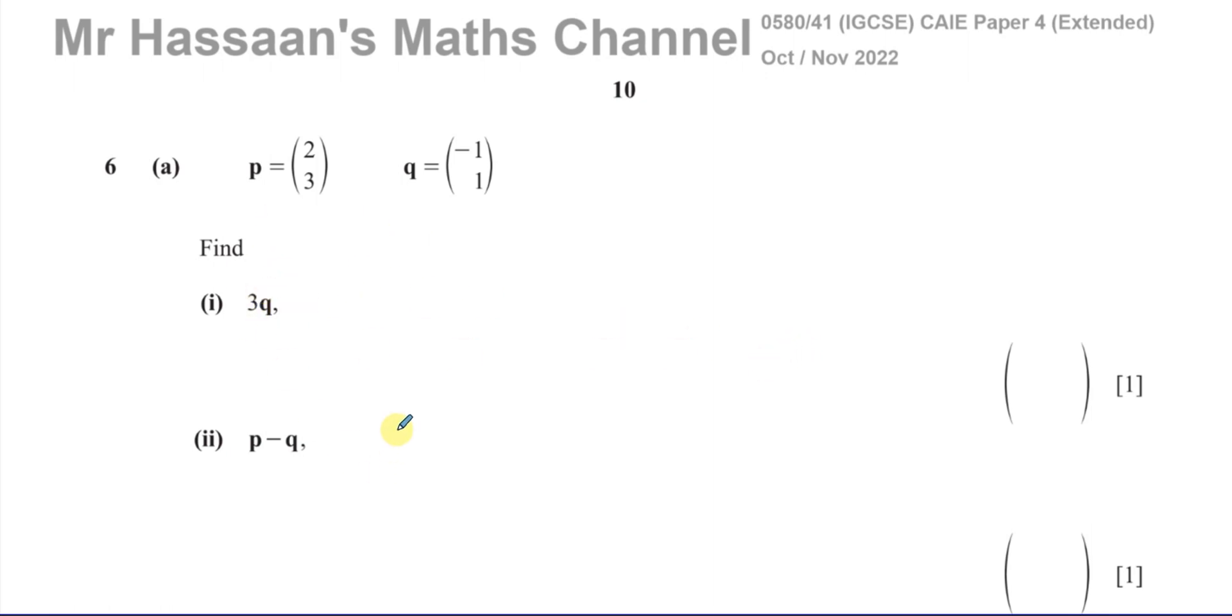The first parts are pretty straightforward. So it says 6a, you've got two vectors, p and q, given as column vectors like this. We've got to first find 3q. So simply, we just take our vector q and we multiply the whole of it by 3. So 3 times minus 1 is minus 3, 3 times 1 is 3. Simple as that, one mark.